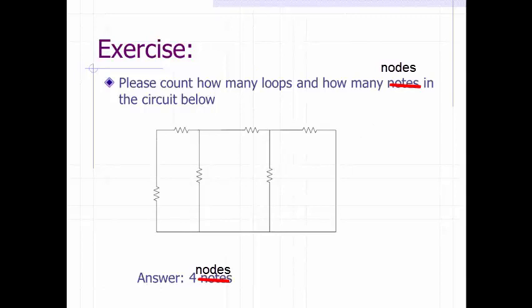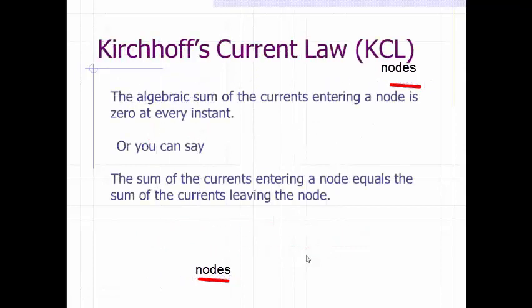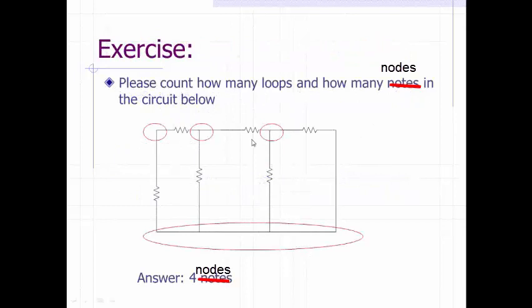Now, how many nodes are in the circuit below? This is one node. Remember, it looks like there are one, two, three, four nodes, but since they are connected by wire, this is one node. Here's one, here's another one, and this one. Overall, we have four nodes.